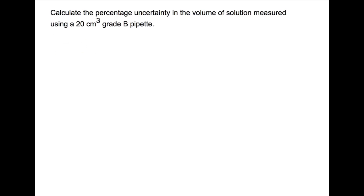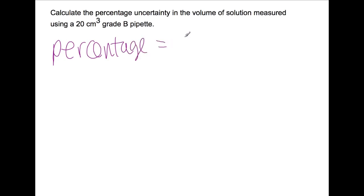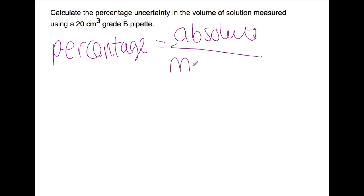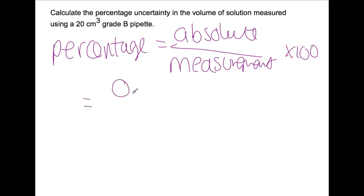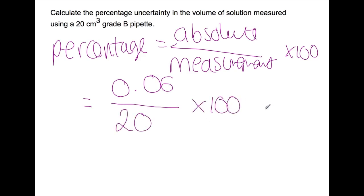So how do we calculate percentage uncertainties? Here we have a solution measured using a grade B 20 cm³ pipette and we're trying to work out the percentage uncertainty. To do this, we take the absolute uncertainty, divide by the measurement, and multiply by 100. Using the table from the previous slide, the absolute uncertainty for a 20 cm³ grade B pipette is 0.06 ml. We're measuring out 20 millilitres, giving us a percentage uncertainty of 0.3%.